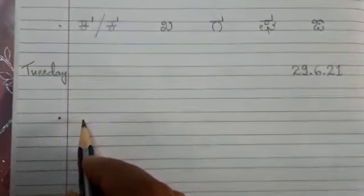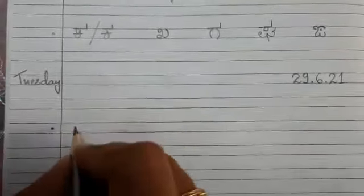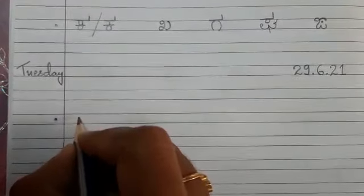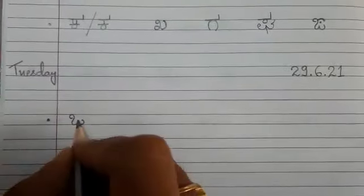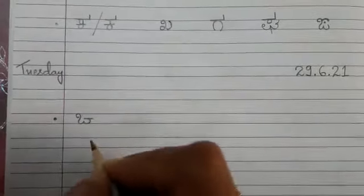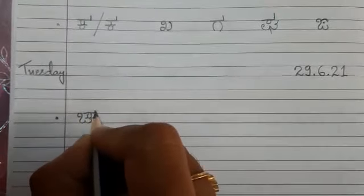Now how to write cha letter, first cha, small cha. Children, very easy. Same like o letter, sleeping line, small zero, sleeping line, standing line.